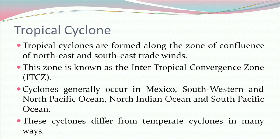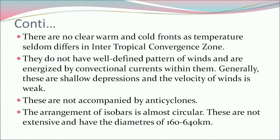Tropical cyclones are formed along the zone of confluence of northeast and southeast trade winds, known as the intertropical convergence zone. They generally occur in Mexico, the southwestern and north Pacific Ocean, the north Indian Ocean, and the south Pacific Ocean. These cyclones differ from temperate cyclones in many ways: there are no clear warm and cold fronts, as temperature seldom varies in the intertropical convergence zone. They do not have well-defined patterns of winds and are energized by convectional currents within them.